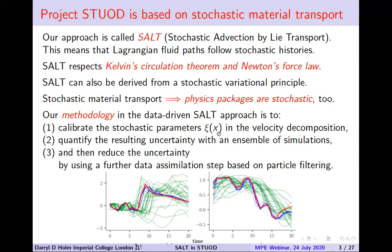Our methodology in the data-driven SALT approach is first to calibrate the stochastic parameters appearing in the velocity decomposition — these parameters are eigenvectors of correlation tensors. Then we quantify the uncertainty by running an ensemble of simulations. Here you see a couple of ensemble members; the green spread around the red truth shows that the ensemble captures the truth. The next step is to reduce the uncertainty using further data assimilation based on particle filtering, shown as the blue line. Particle filtering is working very well for stochastic fluid trajectories.